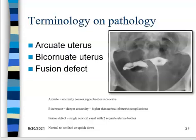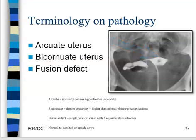Some terminology: arcuate uterus, bicornate uterus, and fusion defects. The upper border of the uterus is supposed to be convex, but sometimes it is concave — an anomaly that may or may not mean anything. A bicornate uterus has a deep concavity and can cause pregnancy complications. A fusion defect is a single cervical canal with two separate uterine bodies.